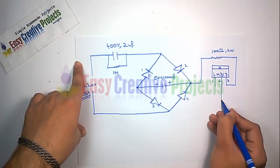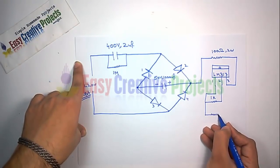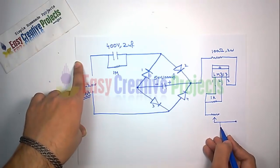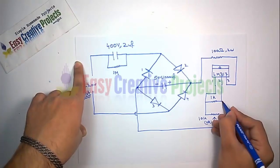Now connect 1K resistor with first and second pin of LM317. And finally connect 10K variable resistor for adjustable output voltage.